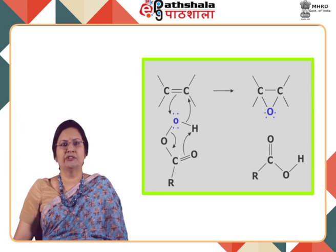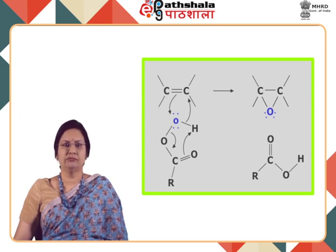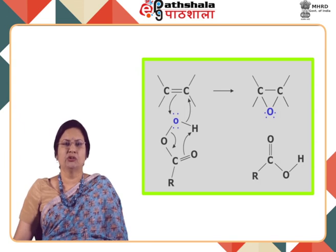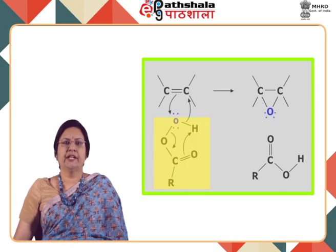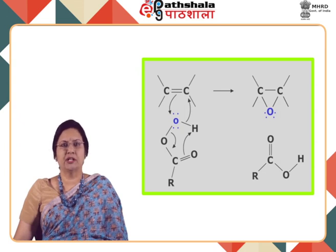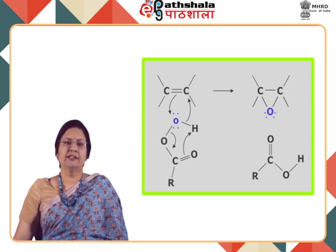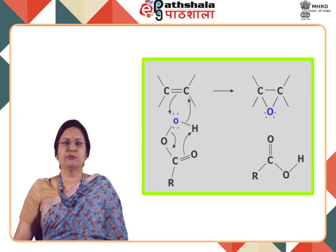The overall reaction amounts to the transfer of the extra oxygen atom from the peroxy acid to the alkene. The actual mechanism is not totally agreed upon, but is thought to involve a concerted process as you can see here. The alkene when reacted with the peroxy acid RCOOOH — this particular oxygen gets transferred and gets attached to the double bond in the form of an epoxide.